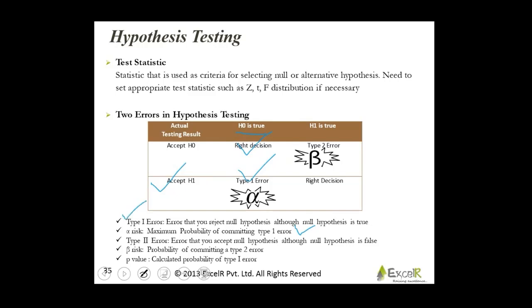This is the probability of committing the type 1 error. And when you call it as type 1 error, error that you reject null hypothesis, although null hypothesis is true. You are innocent, but judge is rejecting the fact that you are innocent. Errors do happen. That is called as type 1 error.